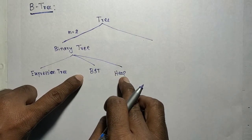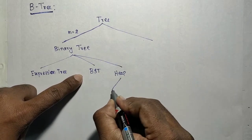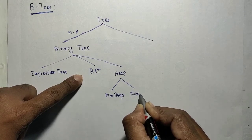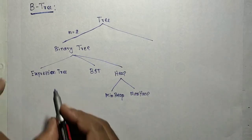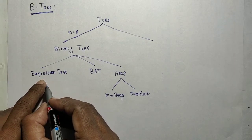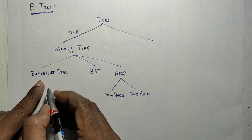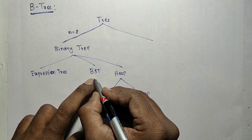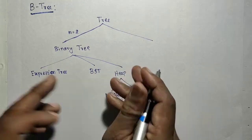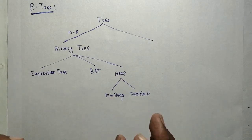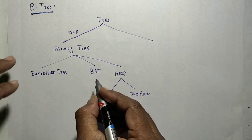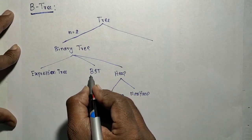In a heap, the root holds either the maximum or minimum value, giving us two categories: min-heap and max-heap. In an expression tree, leaf nodes are operands and internal nodes are operators. If a BST is not height-balanced, it is not very useful, so we defined balanced variants like the AVL tree.